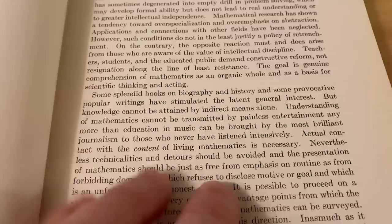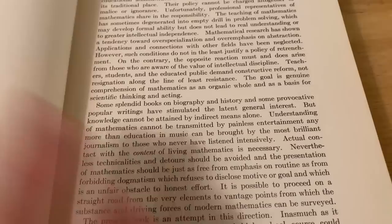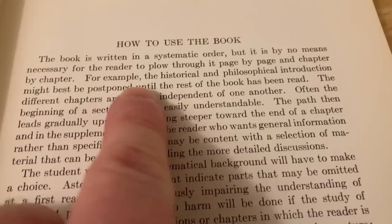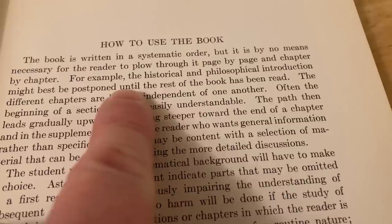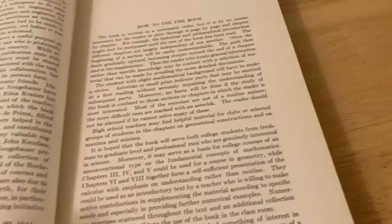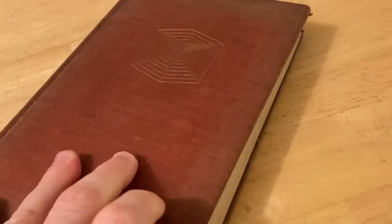Actual contact with the content of living mathematics is necessary. And I feel like that is the theme throughout this book. This is not a book on philosophy. It is not a book on why mathematics should be this way or that way. It is a book on actual mathematics, and Courant explains it in a brilliant way. Here he talks about how to use the book, and I just want to read one sentence to you. It says, for example, the historical and philosophical introduction might best be postponed until the rest of the book has been read. In other words, Courant is more interested in actual mathematics. I'm getting goosebumps because I've spent a great deal of time reading various sections in this book, and he just explains so well.